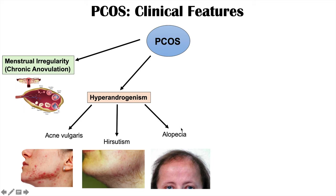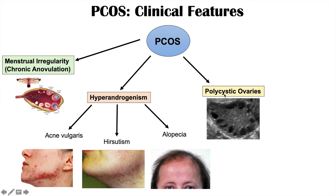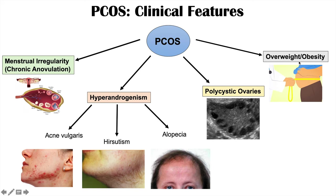The third component is polycystic ovaries — there are multiple cysts within the ovary, which is what gives this syndrome its name. The fourth category of clinical features is being overweight or obese. In fact, the majority of patients with PCOS are overweight or obese, making this a significant finding in these patients.